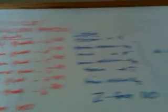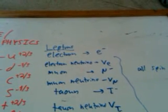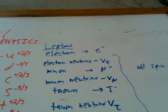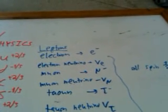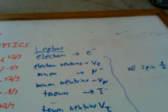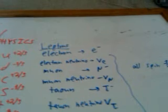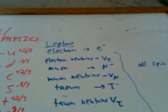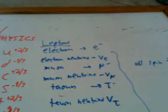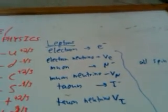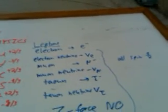In contrast, we have the leptons. If we look at the leptons, one of them should be quite familiar — the electron, symbol E-minus. Then we have the electron neutrino, which is V with a subscript E. All the neutrinos start with V and then have a subscript of the type of neutrino they are. Then there's the muon, which is also minus one, and then the muon neutrino, V subscript mu. And then the tauon and then the tauon neutrino.